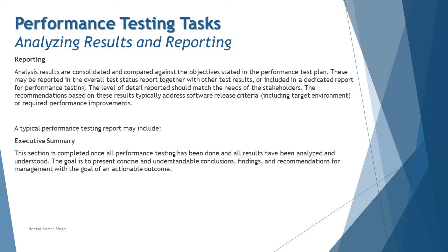In our previous tutorial, part 1 of this section, we spoke about how to analyze results in terms of gathering the necessary metrics, making use of them, consolidating, and coming up with certain outcomes — whether the performance was up to the mark or not. We covered metrics such as status of simulated users, response time, transactions per second, and many other related things.